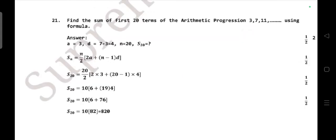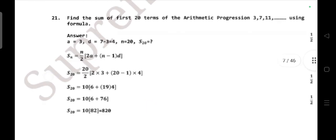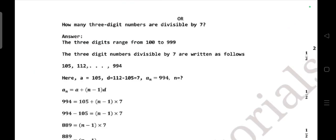Find the sum of the first 28, 20 terms of the arithmetic progression 3, 7, 11 using the formula. Our question: how many 3-digit numbers are divisible by 7? The answer is n = 128.